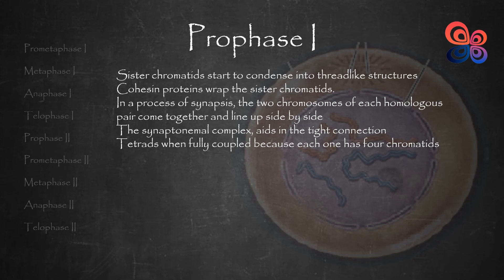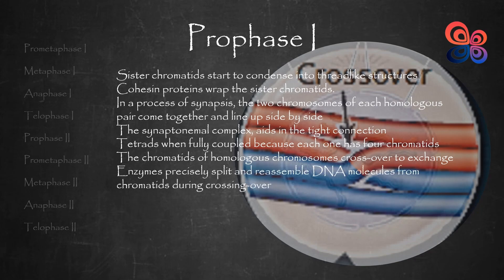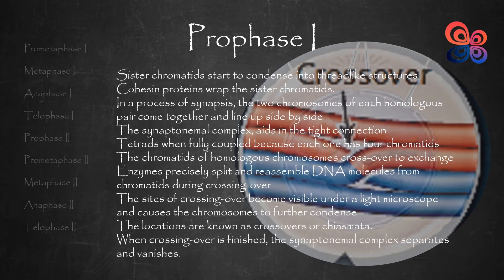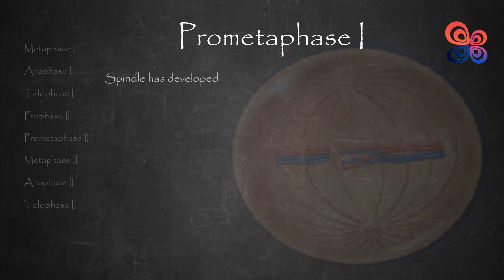The chromatids of homologous chromosomes cross over to exchange portions when they are paired. Enzymes precisely split and reassemble DNA molecules from chromatids during crossing over. The sites of crossing over become visible under a light microscope as prophase 1 progresses and the chromosomes further condense. The locations are known as crossovers or chiasmata. Near the end of prophase 1, when crossing over is finished, the synaptonemal complex separates and vanishes, and a spindle has developed in the cytoplasm.